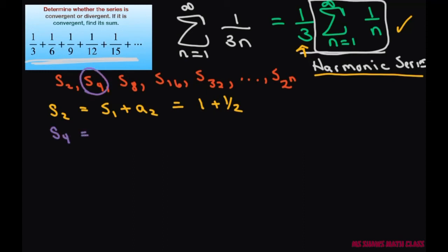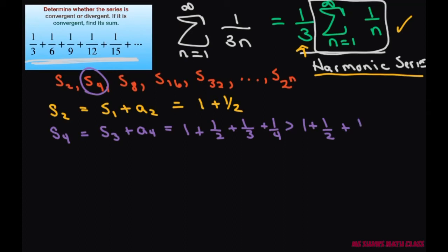Now S₄ is basically your partial sum of 3 terms plus your 4th term. That equals 1 + 1/2 + 1/3 + 1/4. What we want to show is that our partial sums are going to become larger and larger. So we make this greater than 1 + 1/2 + 1/4 + 1/4. We're comparing these two: 1/3 + 1/4 is larger than 1/4 + 1/4, so this side equals 1 + 2/2.